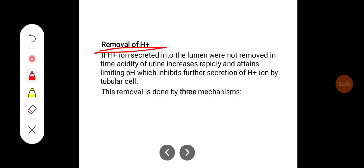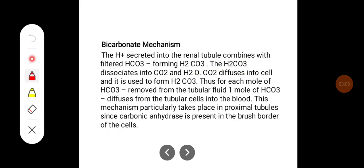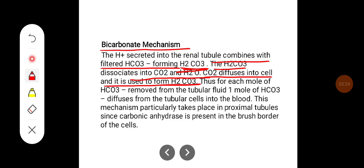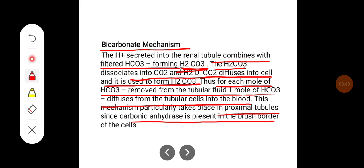Removal of H+ ions: if H+ ions secreted into the lumen were not removed in time, the acidity of the urine increases rapidly and attains a limiting pH which inhibits further secretion of H+ ions by tubular cells. This removal is done by three mechanisms. The first is the bicarbonate mechanism: the H+ secreted into the renal tubule combines with filtered bicarbonate ion forming carbonic acid (H2CO3). The carbonic acid dissociates into carbon dioxide and water. The carbon dioxide diffuses into the cell and is used to form carbonic acid. Thus, for each mole of bicarbonate removed from tubular fluid, one mole of bicarbonate diffuses from the tubular cells into the blood. This mechanism particularly takes place in the proximal tubules since carbonic anhydrase is present in the brush border of the cells.